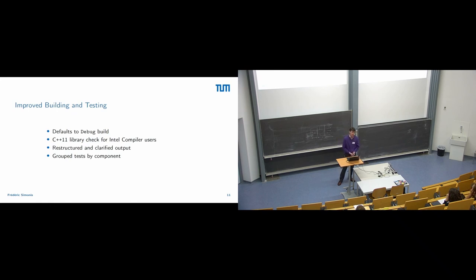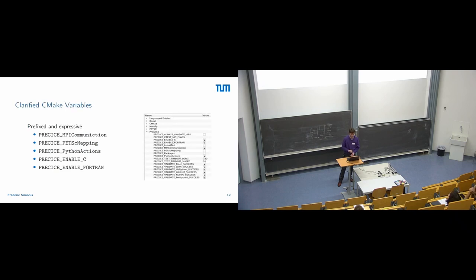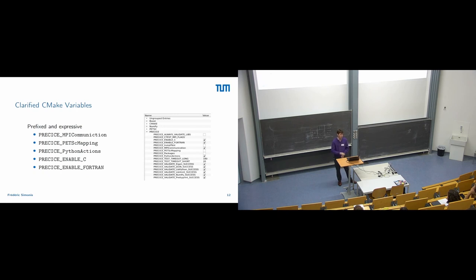We restructured and clarified outputs, so your first impression of preCICE will hopefully be a positive one. We grouped tests by components, so if something goes wrong you can tell us it was in the XML parsing, for example. We also clarified CMake variables — they are now prefixed and use new naming schemes that tell you what they actually do. For instance, we had a Python option that most users thought enabled Python bindings, but it actually enabled custom Python actions used before or after mapping. We completely renamed the options to make them understandable.